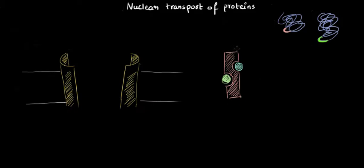Let's see how nuclear transport of proteins works. Some proteins are needed inside the nucleus for various reasons. For example, DNA polymerase and RNA polymerase — all of them are enzymes, which means they are proteins. They are needed inside the nucleus for replication, transcription, and so on. So how do these proteins that are synthesized outside the nucleus — that is in the cytosol by the ribosomes — get transported inside the nucleus?